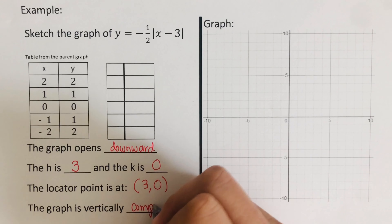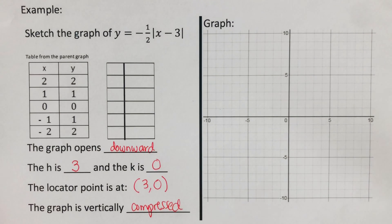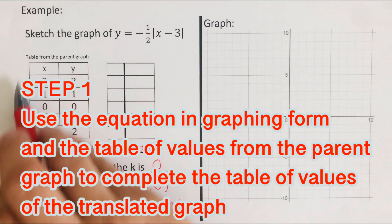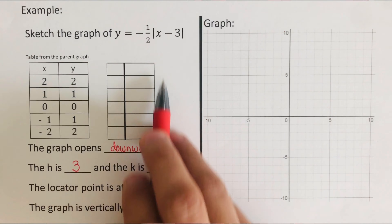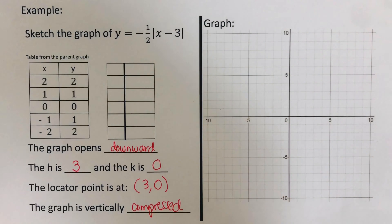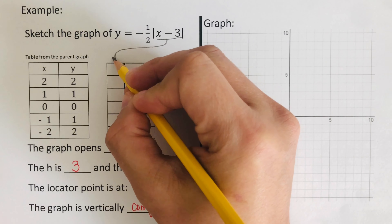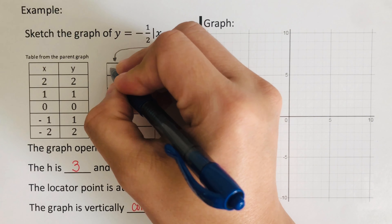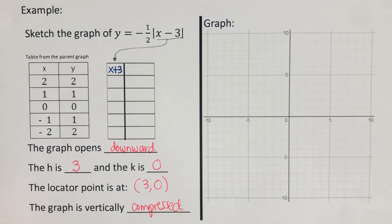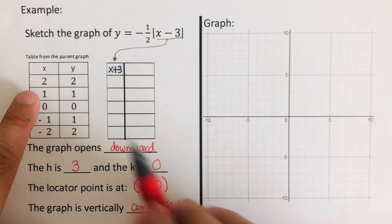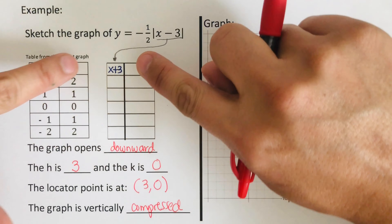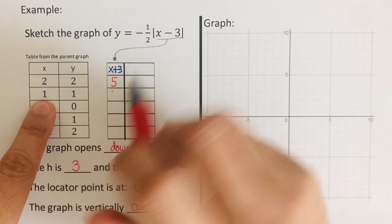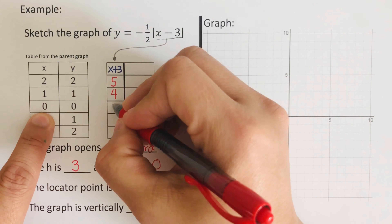I would encourage you to pause this video and try this next problem on your own, then check your answer. For the second example, since a is negative, this opens downward. Our h — we always switch the sign — so this becomes positive 3. The k is not there, so k is 0, not 1. So the locator point is (3, 0). The graph is vertically compressed because the absolute value of a is less than 1.